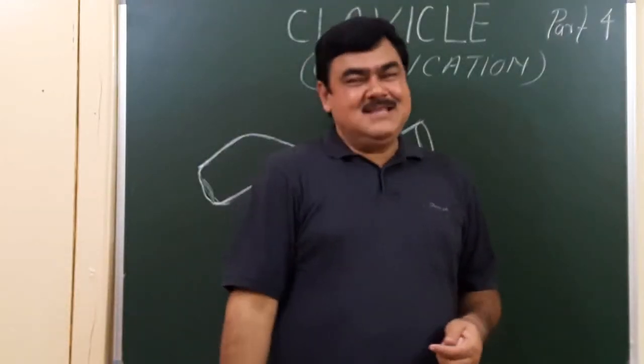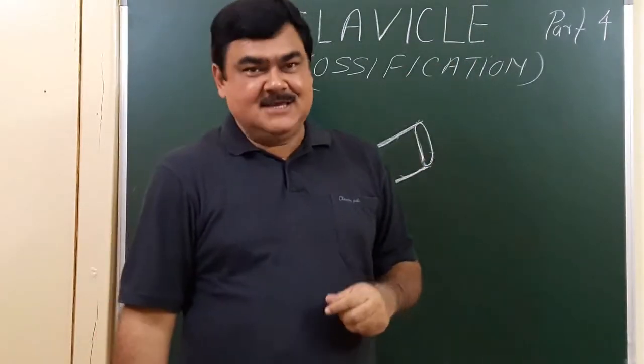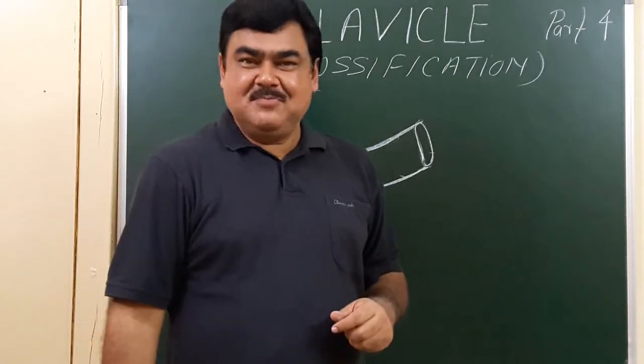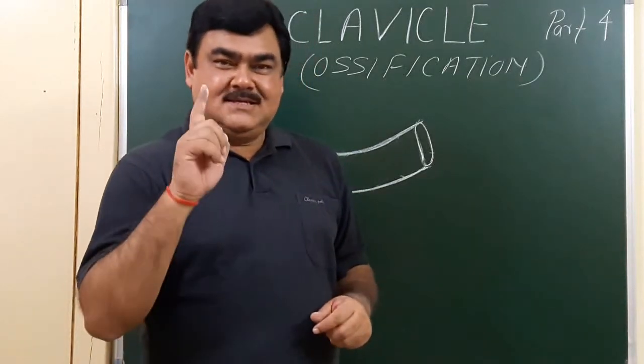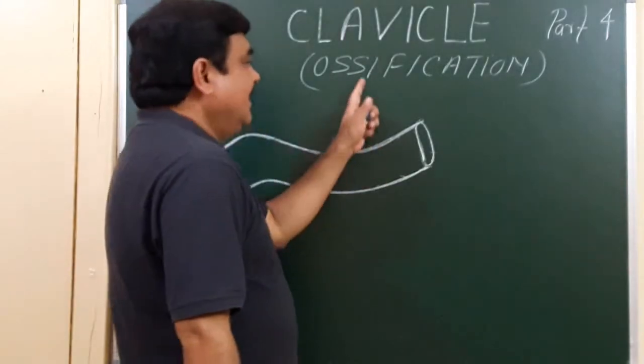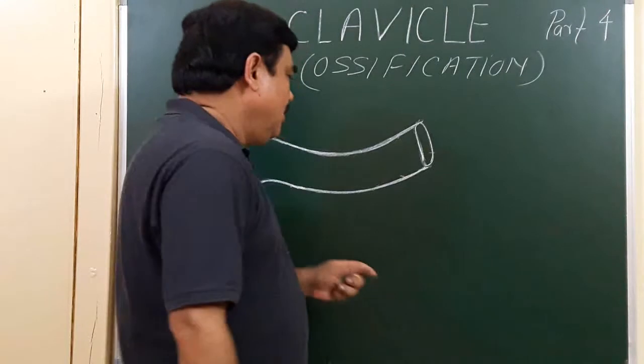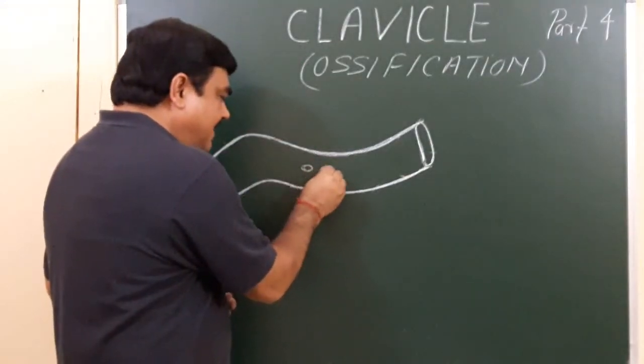Now we'll discuss part four of the clavicle, that is ossification. The clavicle is the first bone to ossify and the second bone is mandible. It has two primary ossification centers that appear in the mid shaft.